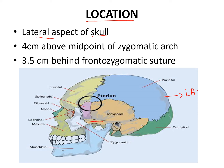What you are seeing here is the zygomatic arch. Take the midpoint of the zygomatic arch and 4 centimeters above the midpoint of the zygomatic arch, you will have the Pterion — or you will have it 3.5 centimeters behind the frontozygomatic suture. So 3.5 centimeters behind the frontozygomatic suture, or 4 centimeters above the midpoint of the zygomatic arch — that is the location of the Pterion.